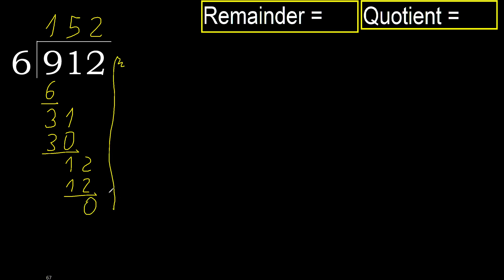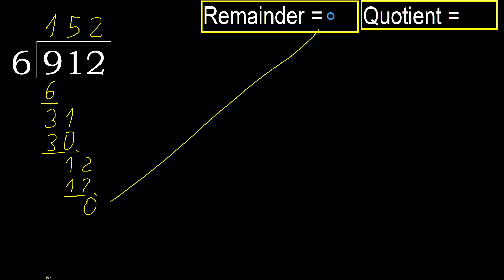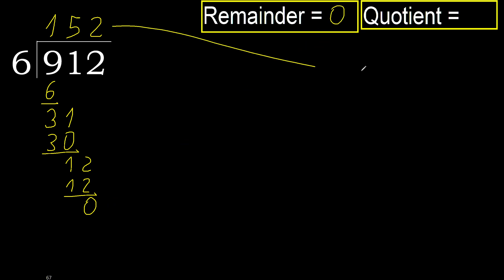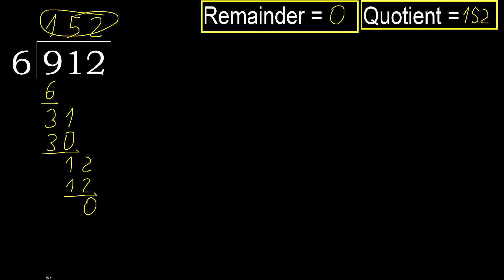There is no next number, therefore finish it. The remainder is 0. Therefore 912 divided by 6 is complete.